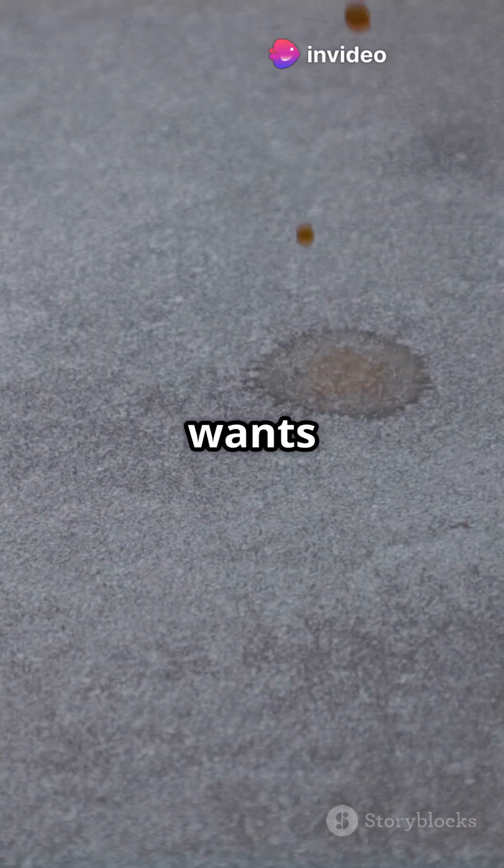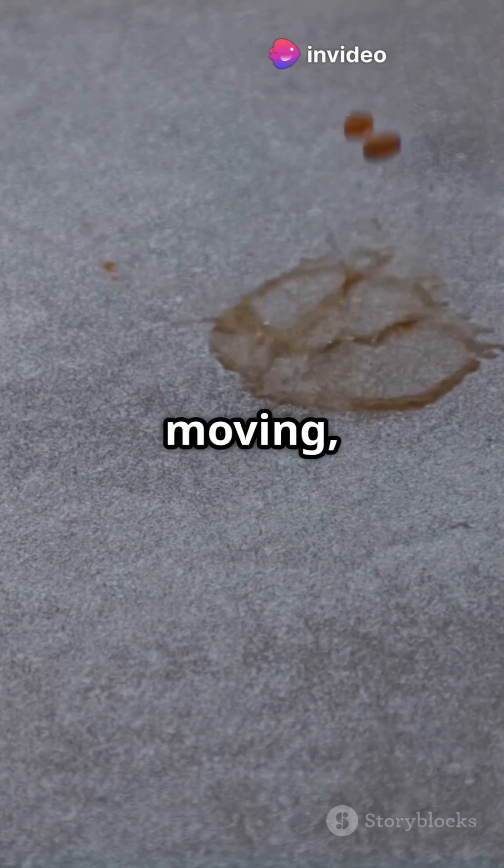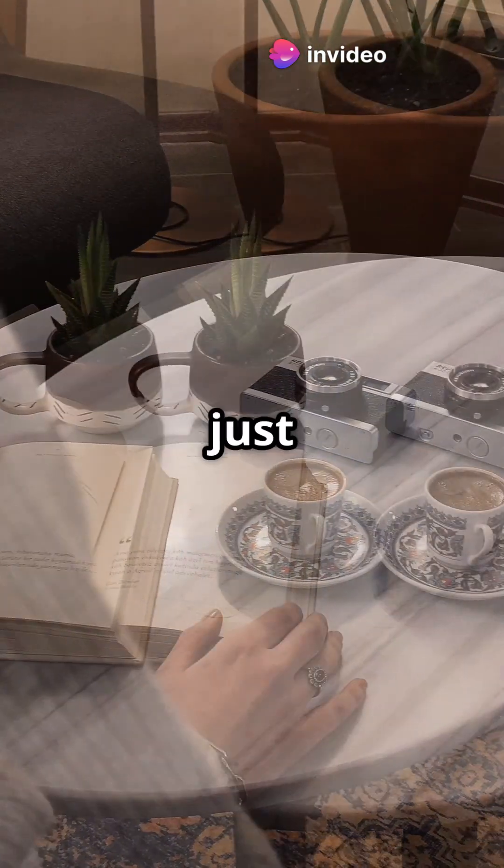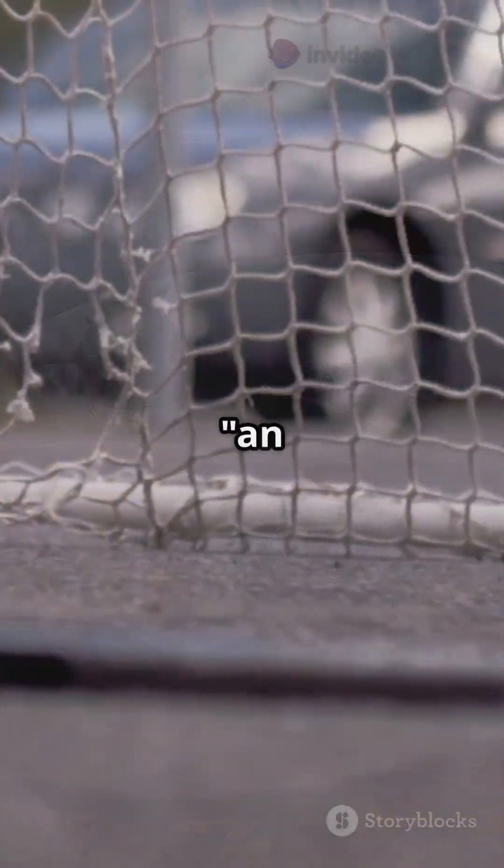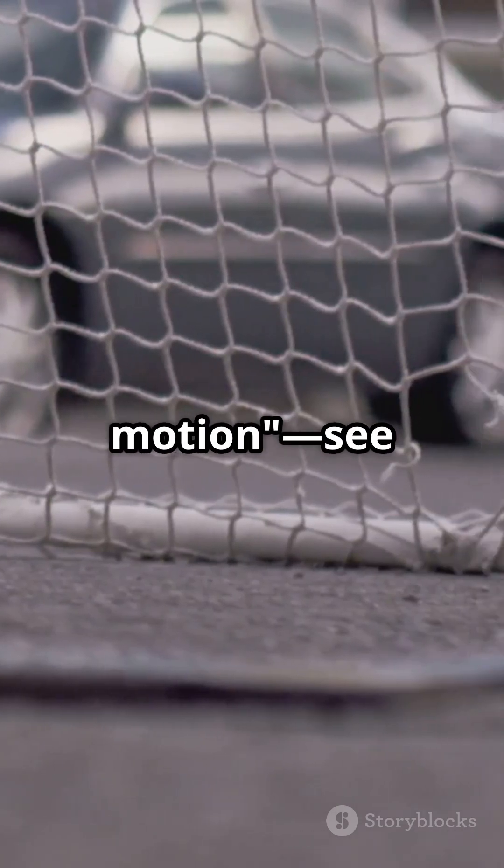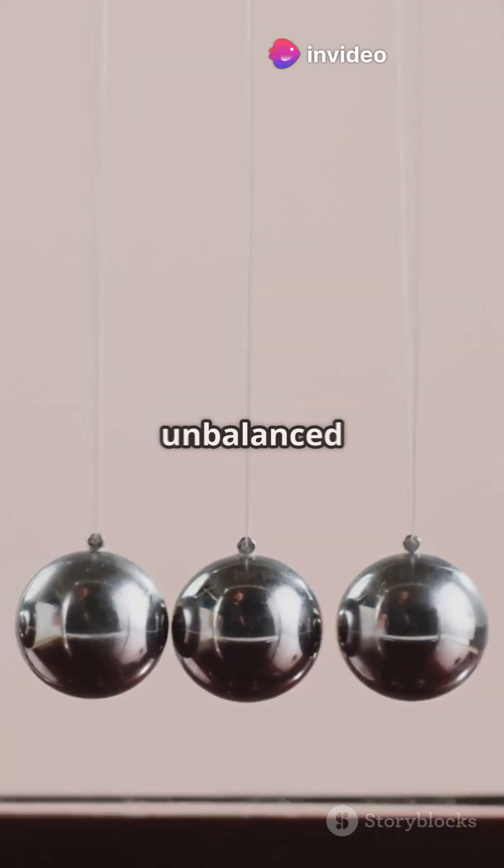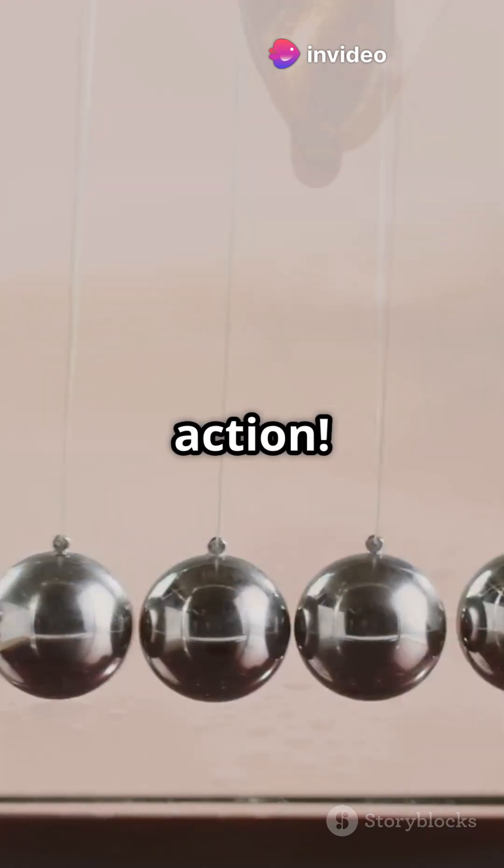If your coffee is sitting still, it wants to stay still. But if it's moving, it wants to keep moving. An object at rest stays at rest, just like your hand chilling on a book. And an object in motion stays in motion. See that ball rolling? It doesn't want to stop. Unless, bam, something unbalanced stops it. That's inertia in action.